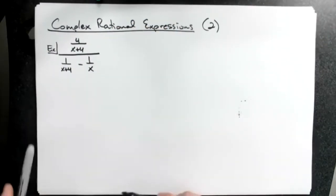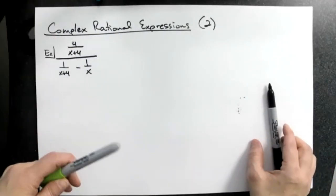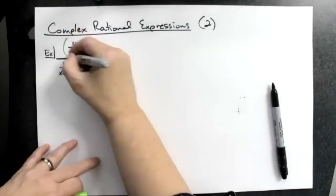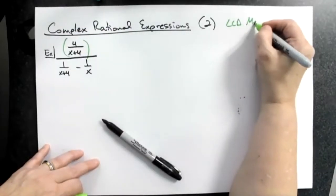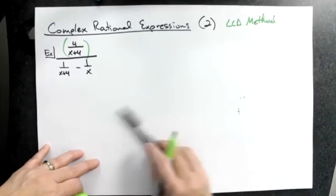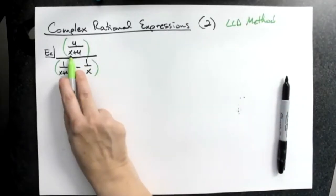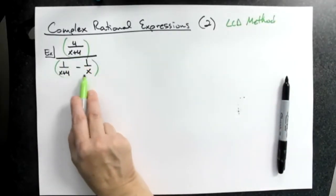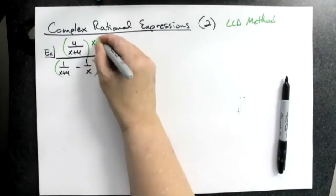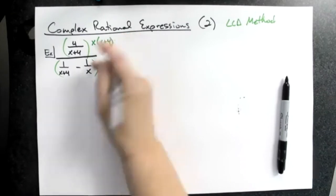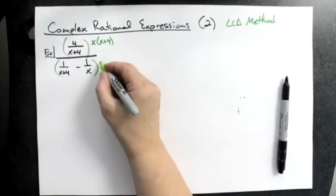The method that we have used all semester to simplify this is to multiply through by that least common denominator. So let's put over here: least common denominator method. I'm going to look at all of my denominators — x plus 4, x plus 4, and x — which means my least common denominator is x(x+4). So I'm going to multiply it by the top and also by the bottom.